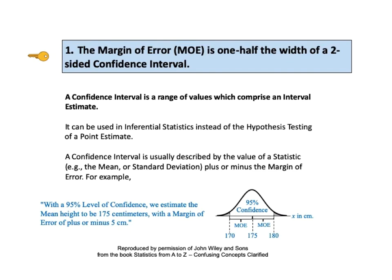This illustrates the conclusion from which the test can be phrased. With a 95% level of confidence, we estimate the mean height to be 175 centimeters with a margin of error of plus or minus 5 centimeters.